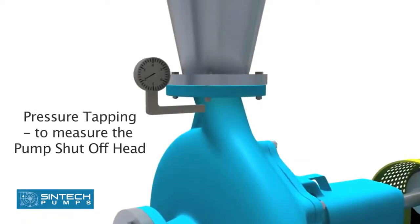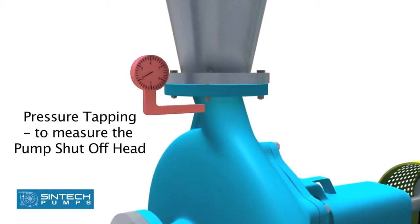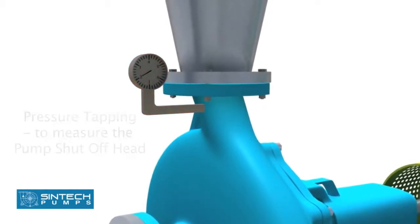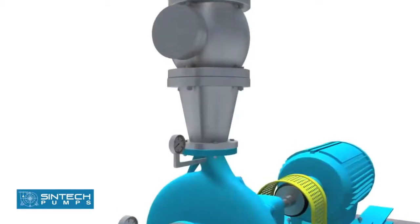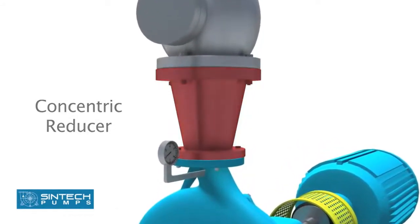There should be a pressure tapping as close to the pump outlet and before the isolation valve as possible to measure the pump shutoff head. Concentric reducers are installed in the discharge pipe to minimize friction losses.